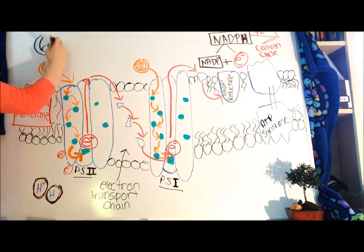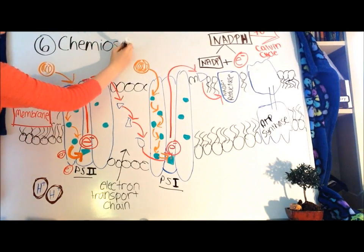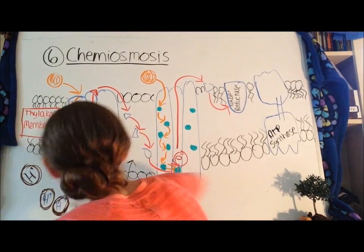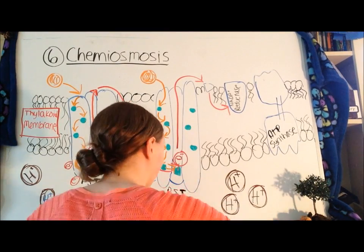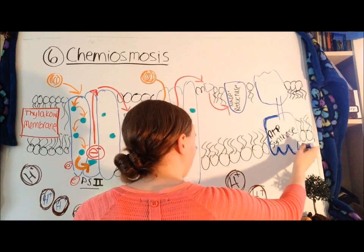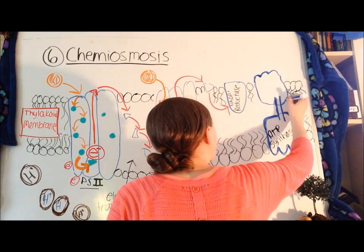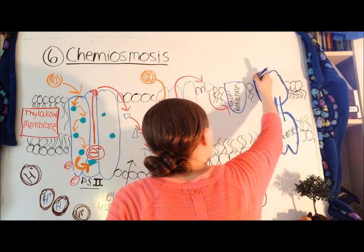Next up is chemiosmosis. There is now a steep concentration gradient of protons which have accumulated on the inside of the thylakoid membrane. This is all from Photosystem II, splitting of water. They begin to follow this gradient and exit through a protein embedded in the thylakoid membrane, called ATP synthase.